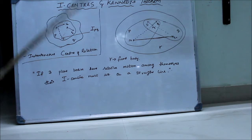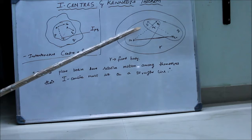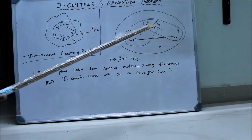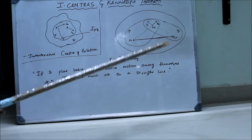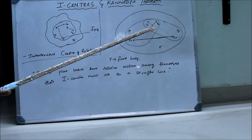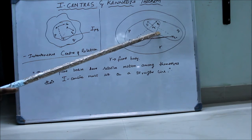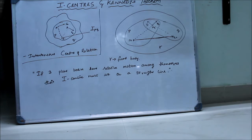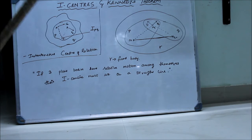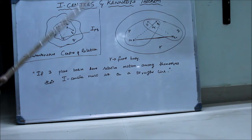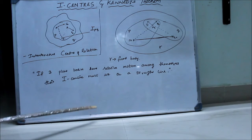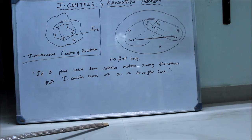Now, we have established that PQ is the mutual I-center of the bodies P and Q. The motion of this I-center has to remain the same no matter which body we consider it with. The motion of PQ should remain the same whether we consider it with body P or with body Q. It is just like saying that if two houses have only one door, the people from both houses should move only through that door — they cannot come out through any other way. Similarly here, the I-center will have the same motion no matter with respect to what body we consider it. That is the basic sense of Kennedy's theorem.